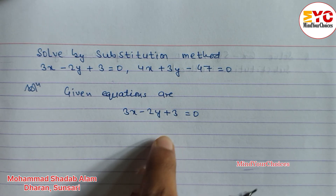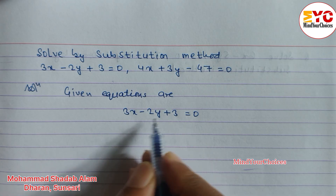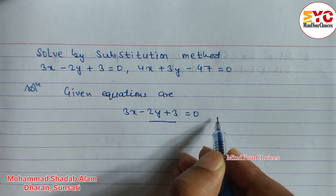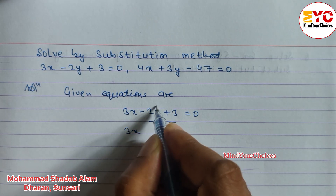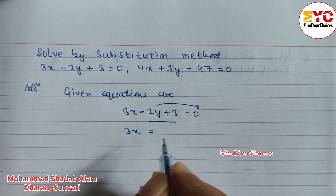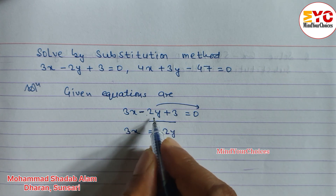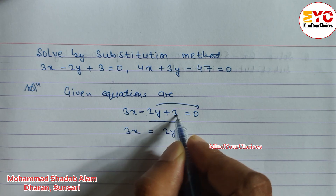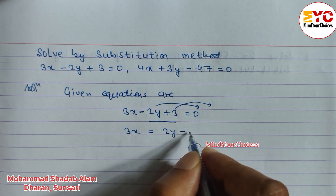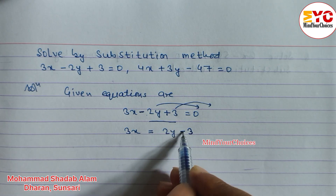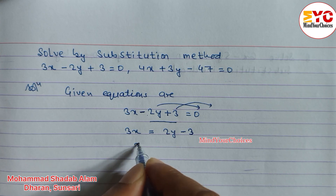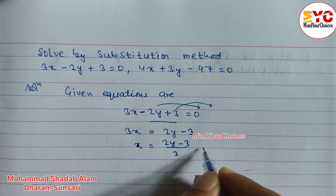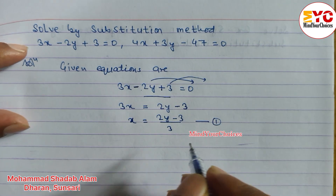From equation 1, we find the value of x. We can write: 3x is equal to 2y minus 3. So x is equal to 2y minus 3 divided by 3. This is our expression for x from equation 1.